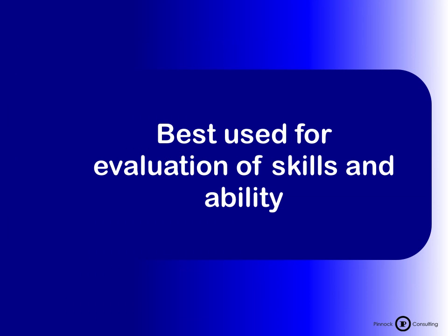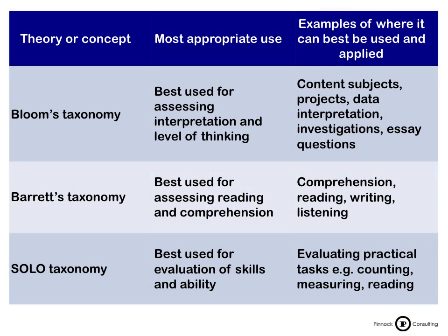The SOLO taxonomy is best used for evaluation of skills and ability. So there you have three totally different taxonomies, all based on the same concept of low, middle, and high order thinking. A summary shows the different theories and their most appropriate uses: Bloom's taxonomy is best for interpretation and levels of thinking, Barrett's is very appropriate for reading and comprehension, and SOLO taxonomy is very much for skills and learner ability, with practical examples of where each can be applied.